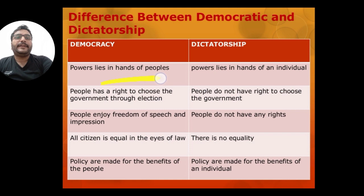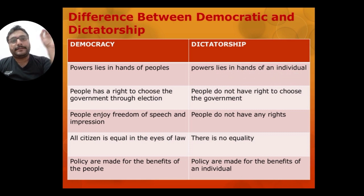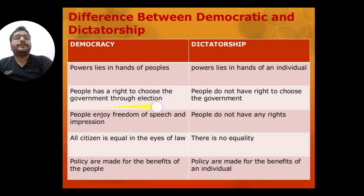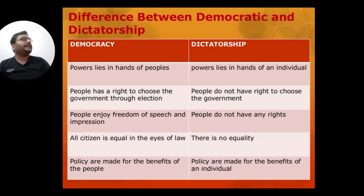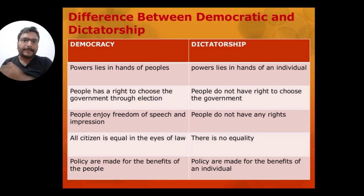Now the difference between democratic government and dictatorship. In democracy, power lies in the hands of the people — through voting. In dictatorship, power lies in the hands of the individual dictator. In democracy, people have the right to choose the government through elections. People enjoy freedom of speech and expression — they can praise or criticize the government.